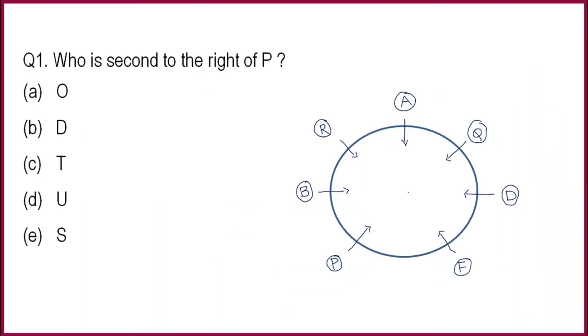We will solve the questions. Who is second to the right of P? Second to the right of P is one, two, it is D. Next question: Who is to the immediate left of F? It is of course P. Next: Who is on the immediate right of D? It is Q. Who is on the immediate right of Q? This is also simple, it is A.